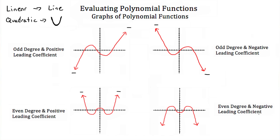And then if we have a negative leading coefficient on an even-degree polynomial, it's the same graph but upside down — we end low and start low. What's important to realize is: if we have an odd degree and a positive leading coefficient, as we go to negative infinity on the x-axis, our function goes to negative infinity, and as we go to positive infinity on the x-axis, our function goes to positive infinity.